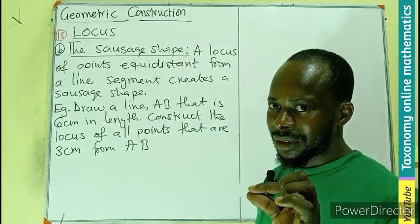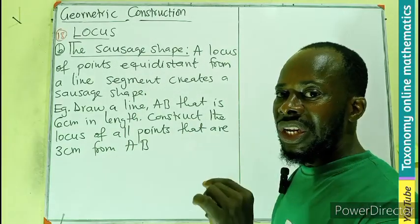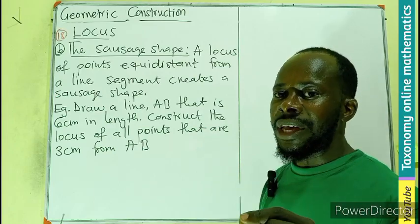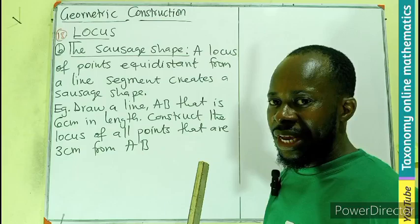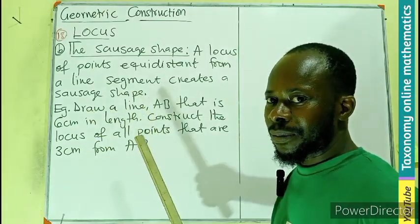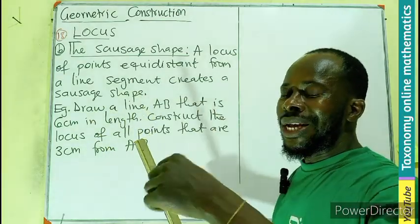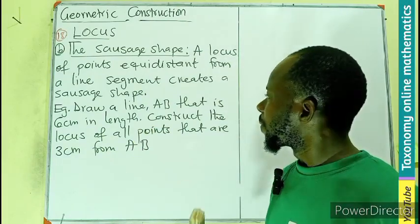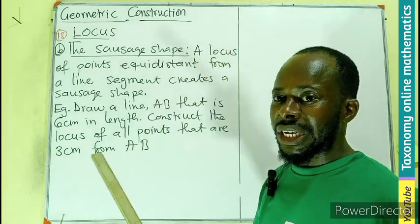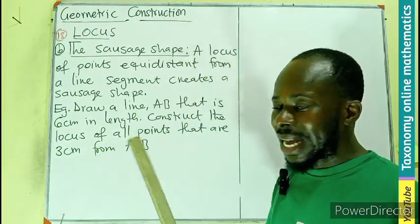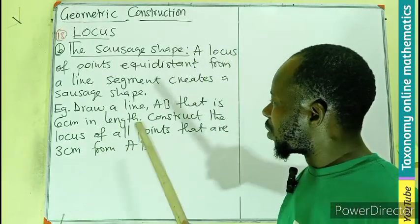Now how would the phrase be in the question? You have to draw a line AB, so the question will have line AB that is six centimeters in length. Then the question will be: construct the locus of all points that are three centimeters from the line segment AB.